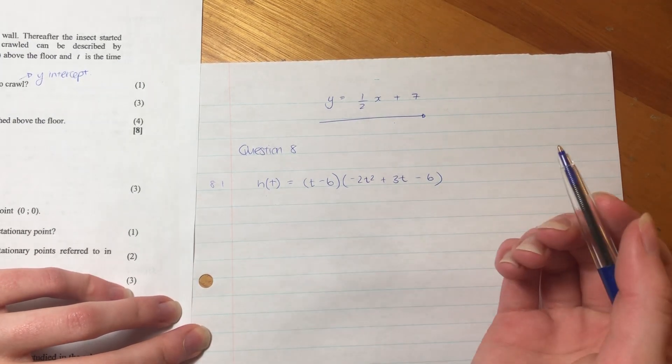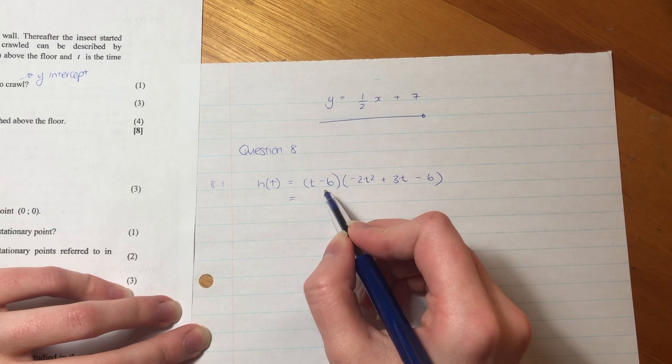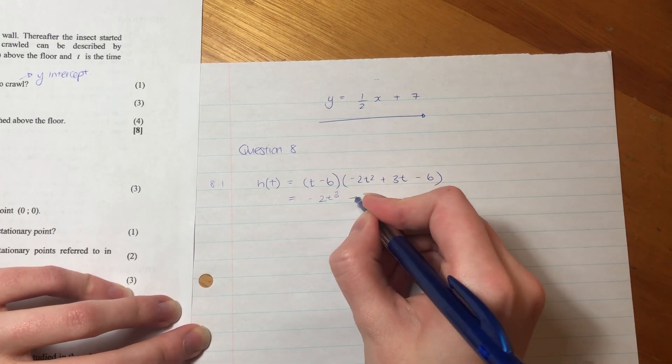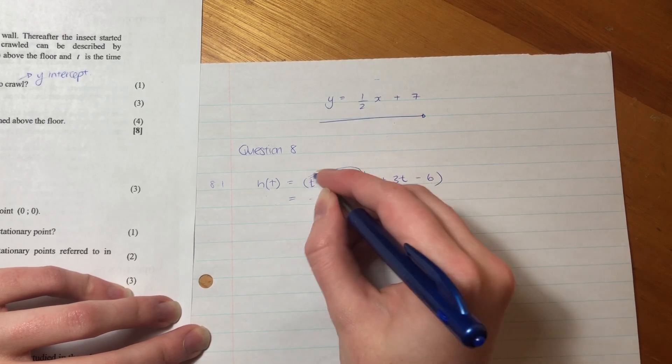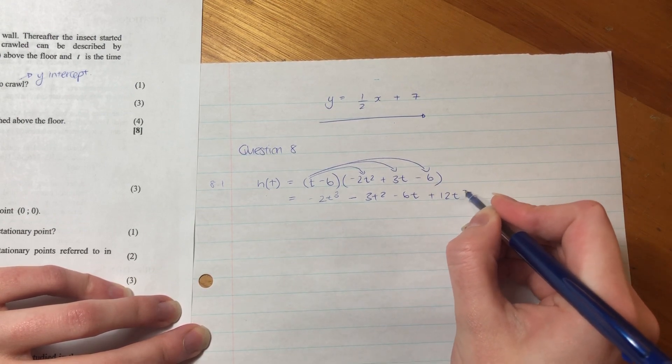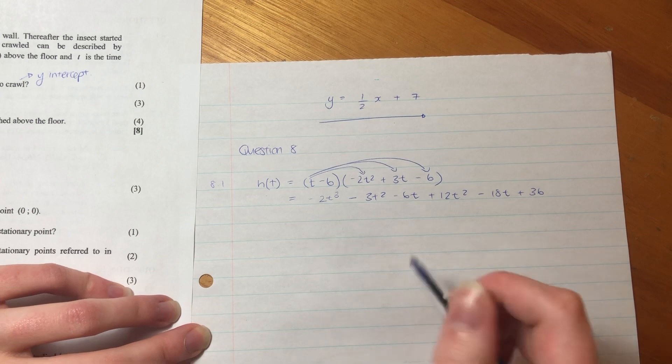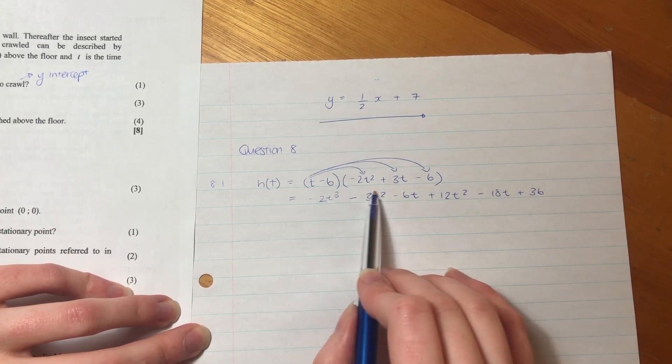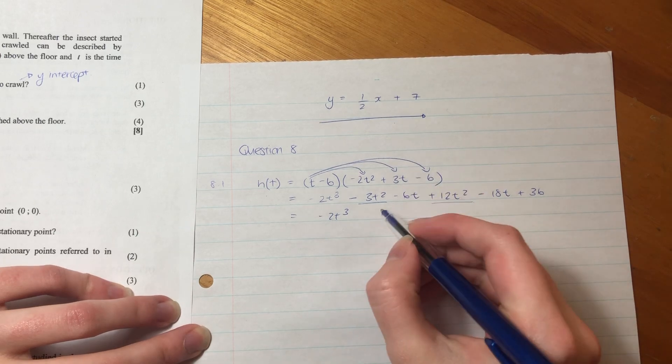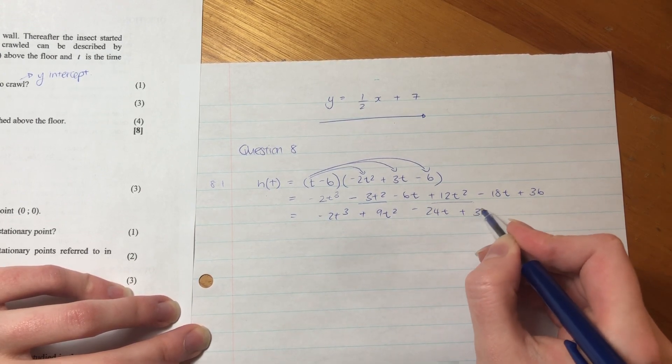Before we even get to the question, I just want to show you why it's a cubic graph. We must start to be familiar with these things. So let's just quickly FOIL, multiply it out. So that's negative 2T cubed, negative 3T squared. Then we have negative 6T, then we have positive 12T squared, negative 18T, and then positive 36.